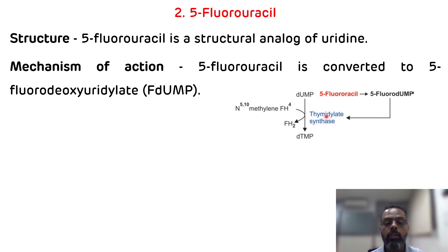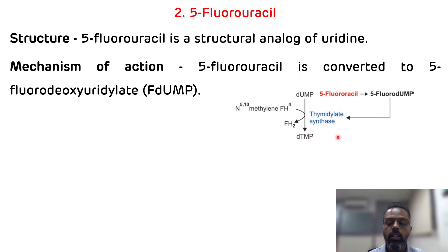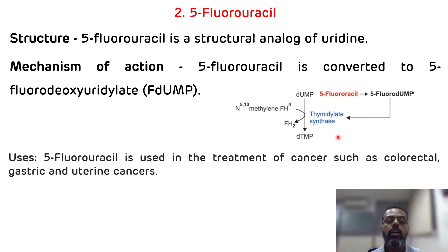Remember, thymidylate synthase converts deoxyuridine monophosphate into deoxythymidine monophosphate, so this particular step will be inhibited. The uses of 5-fluorouracil: it is used in the treatment of various cancers such as colorectal, gastric, and uterine cancers.